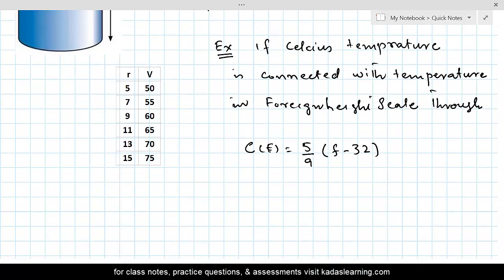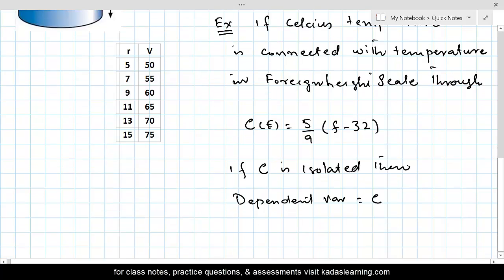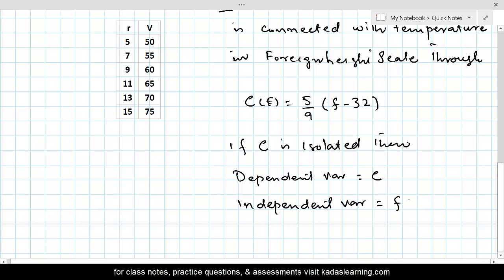In this case, if C is isolated, then the dependent variable will be C. Because C is expressed in terms of F, F would be the independent variable.